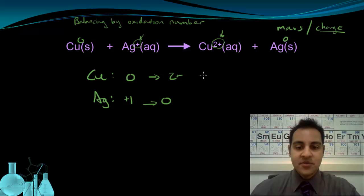Well, for copper, it tells us that we lost two electrons. That's how we went from a zero to a +2. We lost two negative electrons. For silver, we went from +1 to zero. It was reduced, so we had to gain an electron.